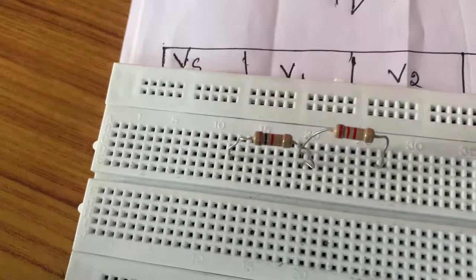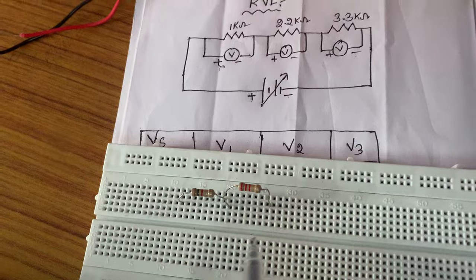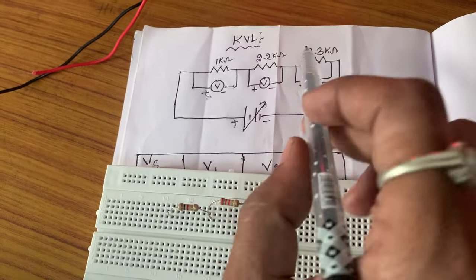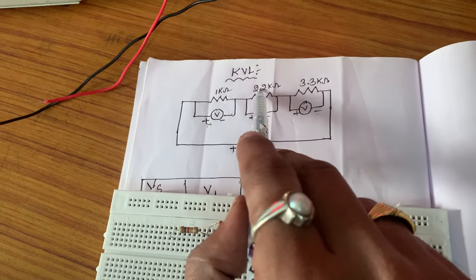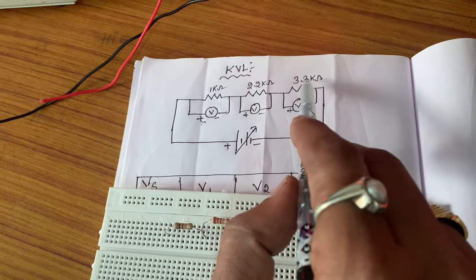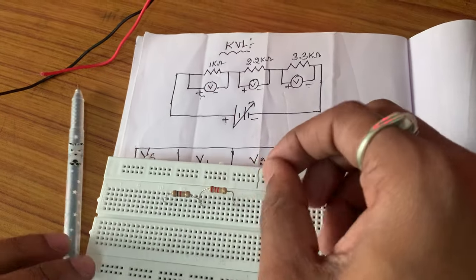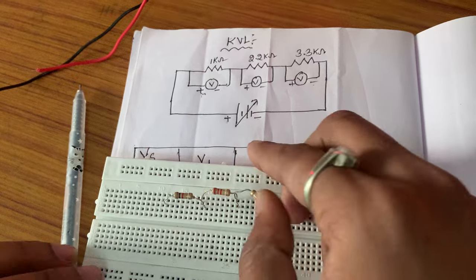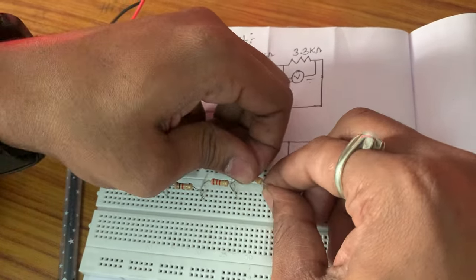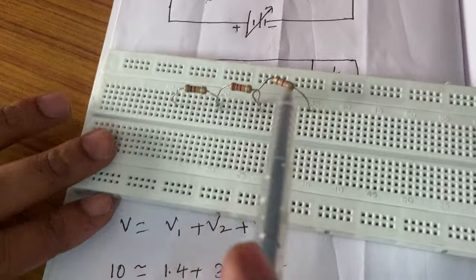These two terminals should be connected vertically because they are connected. The 2.2 kOhm second terminal is connected to the 3.3 kOhm first terminal. Now I have connected all three resistors.